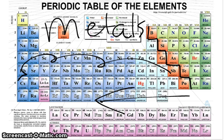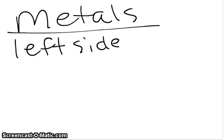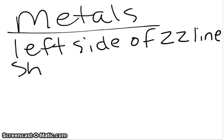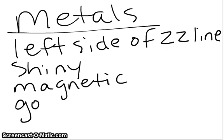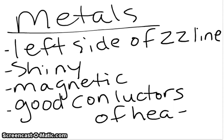Let's go ahead and go over to your notebook and write a few things about metals. Left side of zigzag line. They are generally shiny, magnetic, and good conductors of heat. That's why we usually don't set a metal spoon in a boiling pot of water, because it's going to conduct the heat and burn your hand. So good conductors of heat and electricity. As long as you have this written down, that's all I care about.